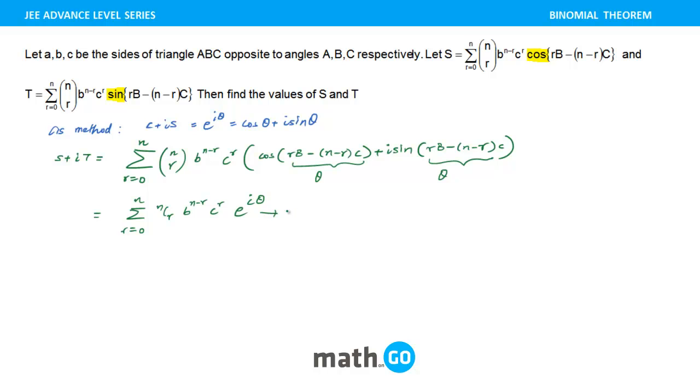And in fact, if I want to elaborate, let's write e raised to power iota (rB minus (n minus r)C). And I can split this into two forms: e raised to power iota rB into e raised to power iota minus (n minus r)C. This is what I can write. Now I will try and integrate this with the values which are there.